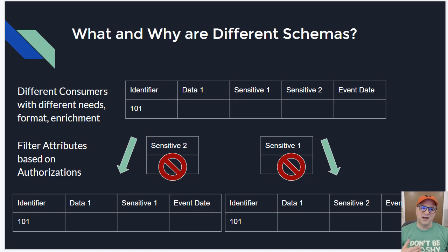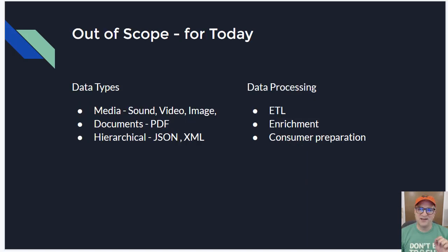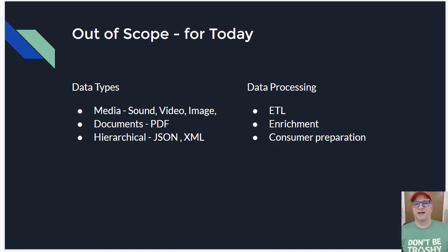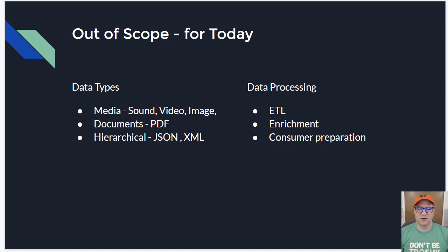The question is how do we create either views or other copies of the data to show different versions based on who we are or the business case. Media files are out of scope — not going to talk about documents or hierarchical data. This is record-oriented data only, and we won't be talking about ETL, how you convert data, how enrichment works, or how consumer data prep is done.